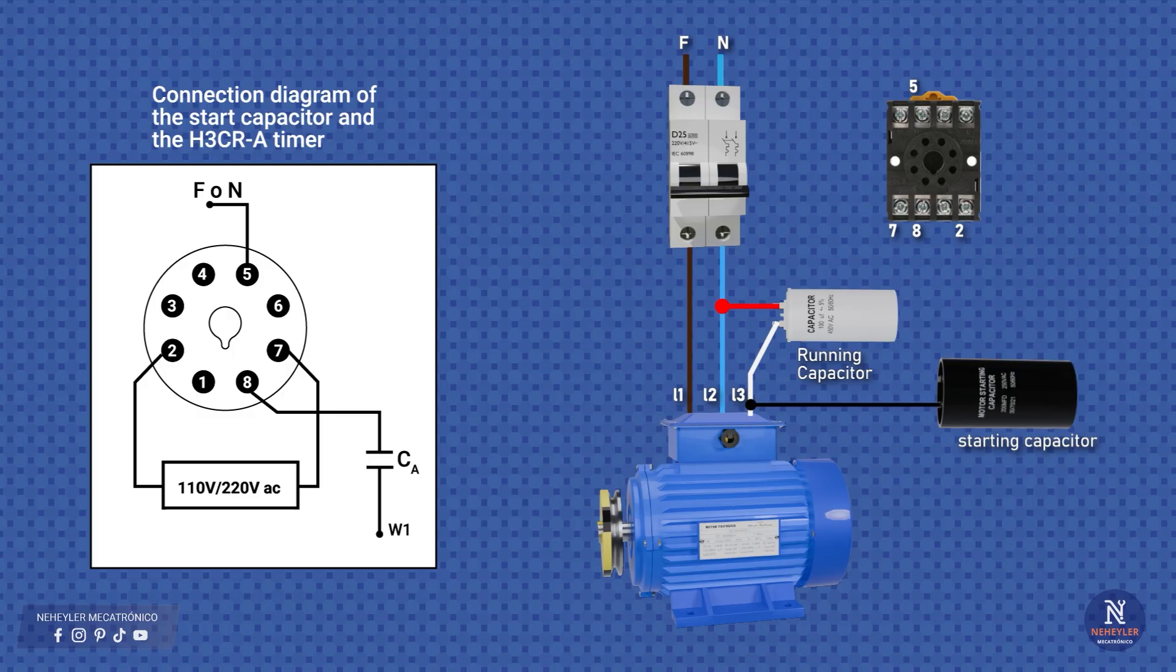Now let's see how to make the complete connection. On the left we have the wiring diagram, where it is clearly shown how the start capacitor goes through the H3CR-A8 timer. On the right we see the representation with the real elements, the circuit breaker, the motor, the capacitors, and the timer base. This timer has 8 connection terminals, and for our circuit they must be wired as follows. Terminals 2 and 7 are the timer supply, here we connect phase and neutral that come from the circuit breaker. Terminal 8 is the common contact, from which we take the connection to the start capacitor. Terminal 5 is the normally closed contact, which completes the circuit to neutral or to the other line, depending on the required rotation direction. Finally we place the timer on its base to leave it ready.